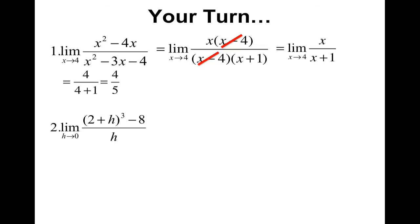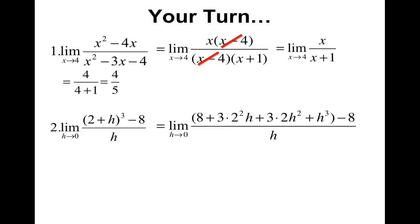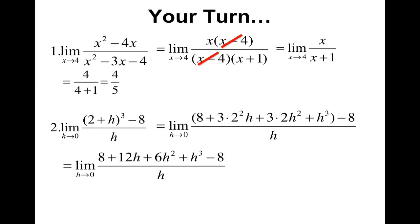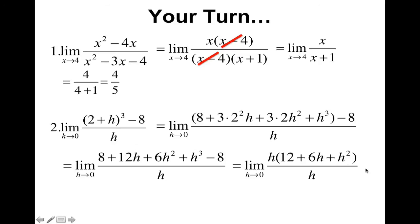Now the second problem. The algebra here requires expanding out the quantity two plus h cubed. You can do that by multiplying it out multiple times or using Pascal's triangle. After expanding and combining like terms, the eights go away and I can factor out an h on the top. Notice there's an h on the top and the bottom — that can be canceled. I'm left with 12 plus 6h plus h squared. Now I can plug in zero, and I get 12.